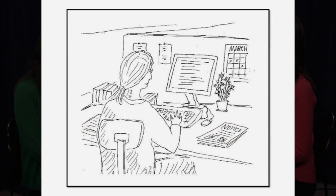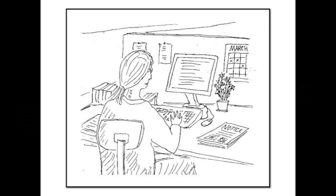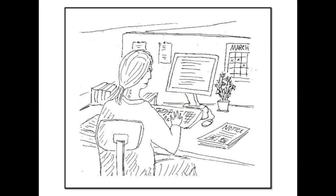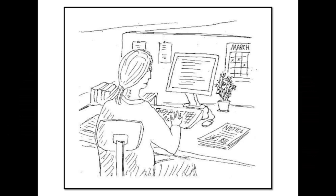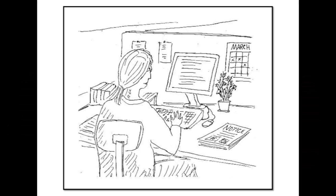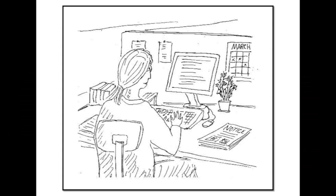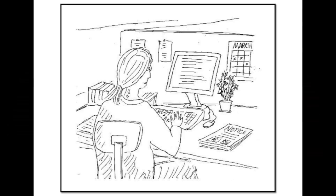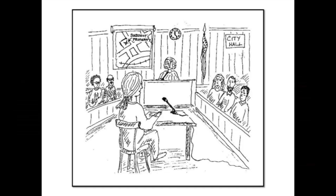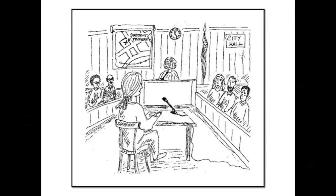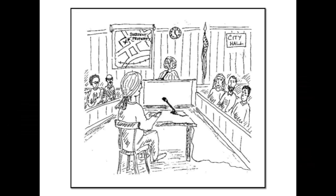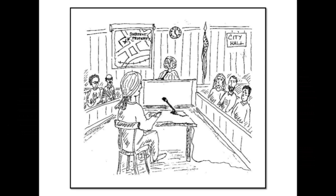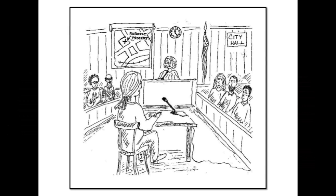Planners then review the proposal and all the comments received, and prepare a staff report for the public hearing. The staff report contains recommendations on the proposal — for example, whether we recommend approval or denial. At the public hearing, we present our report and recommendations to the hearings officer who hears all of the testimony.